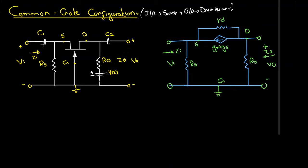To perform AC analysis, capacitors C1 and C2 are shorted out, and VDD is grounded. After shorting the capacitors and grounding VDD, RD becomes directly connected to ground.